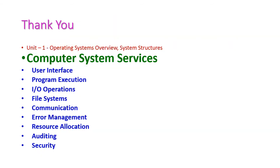Up to this point, we have seen the operating system services from the first unit, including user interfaces, program execution, IO operations, file systems, communication, error management, resource allocation, auditing, and security. In the next class we will see another important topic from the first unit. You can expect this question as a 10-mark or 5-mark question in the university examination. Thank you.